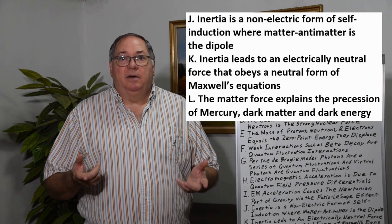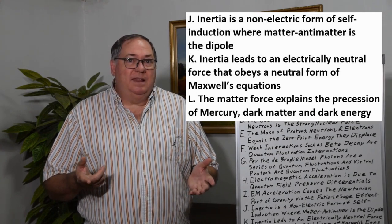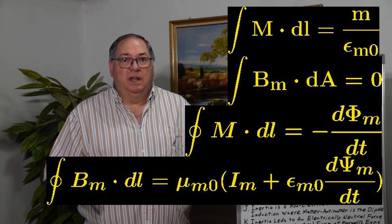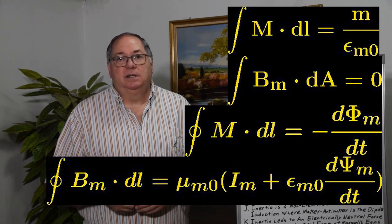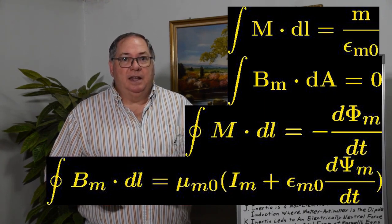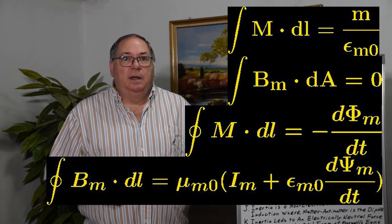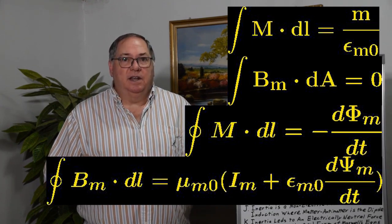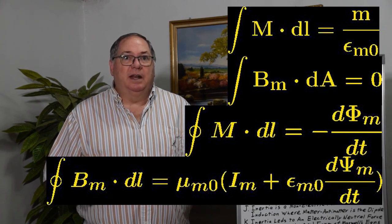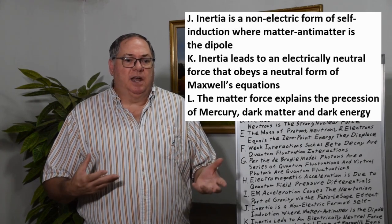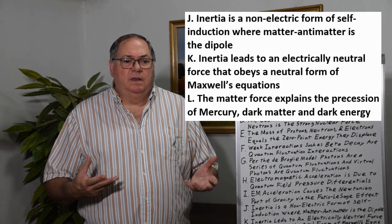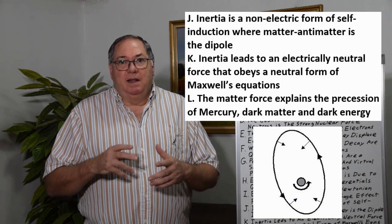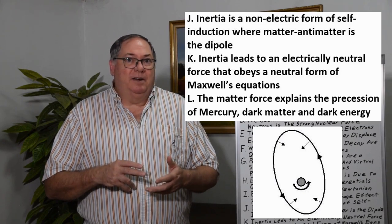If matter and antimatter are a dipole, then that leads to us having an inertial force that expands to a matter force that obeys a form of Maxwell's equations. This isn't new since Heaviside came up with the idea of gravitoelectromagnetics back in the 1890s, and many people have studied it since. But what's been missed is it has nothing to do with gravity. Inertia is the basis for gravitoelectromagnetics, and that explains things such as gyroscopic motion. The matter force in turn explains the precession of Mercury, dark matter, and dark energy.